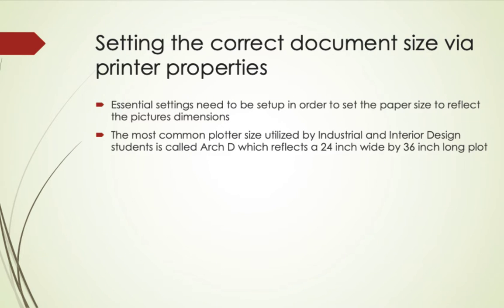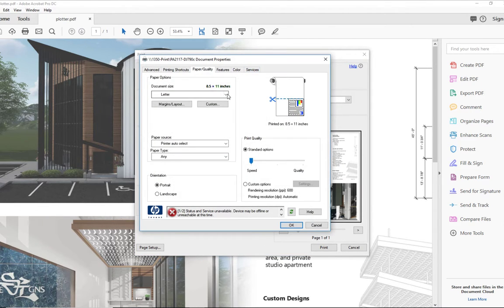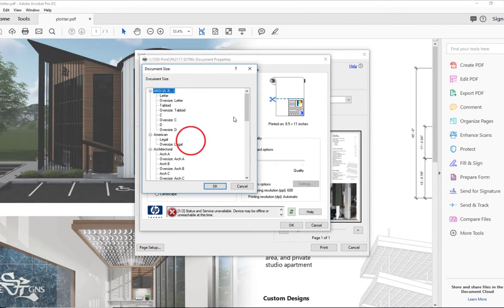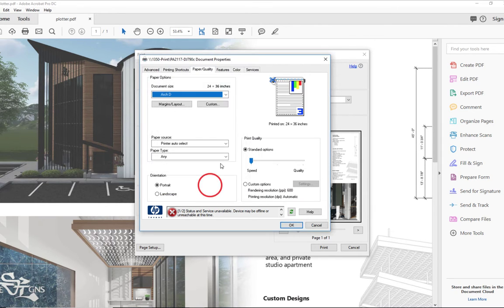It is important that you set the correct document size via printer properties. There are essential settings that need to be set up in order to set the paper size to reflect the picture's dimensions. The most common plotter size utilized by industrial and interior design students is called ArchD, which reflects a 24 inch wide by 36 inch long plot. Please click on the properties box. Use the pull down for the document size, choose more, scroll down, and choose ArchD. Click the OK button.